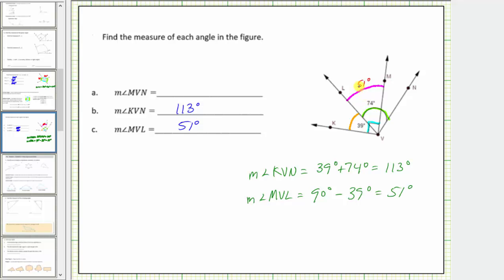Now let's determine the measure of angle MVN. Notice how the measure of angle LVM plus the measure of angle MVN must equal the measure of angle LVN, which is 74 degrees. Therefore, the measure of angle MVN must equal 74 degrees minus 51 degrees, which equals 23 degrees.